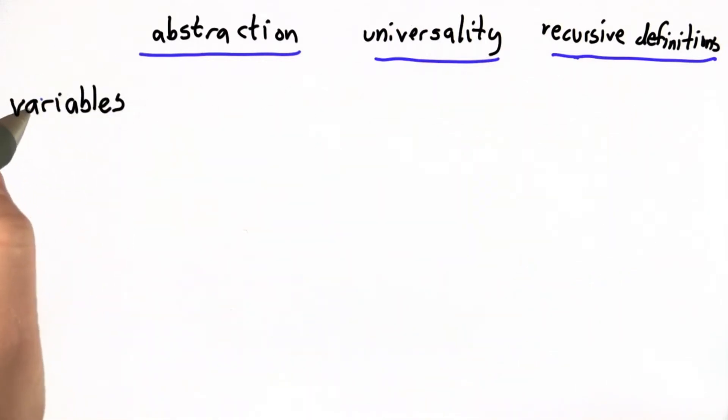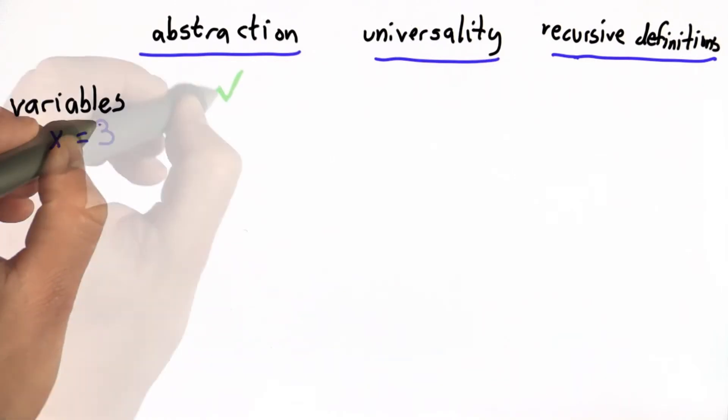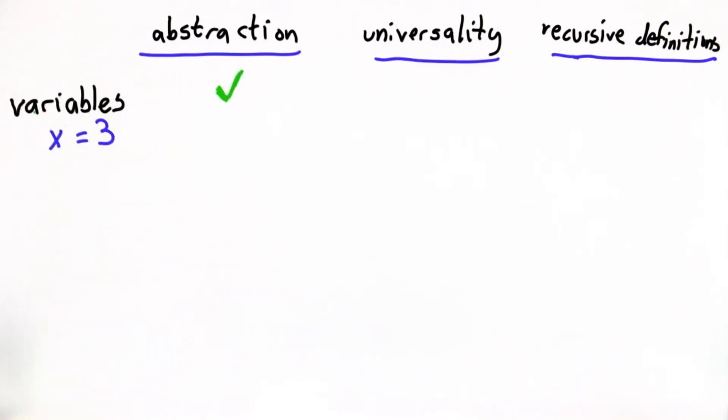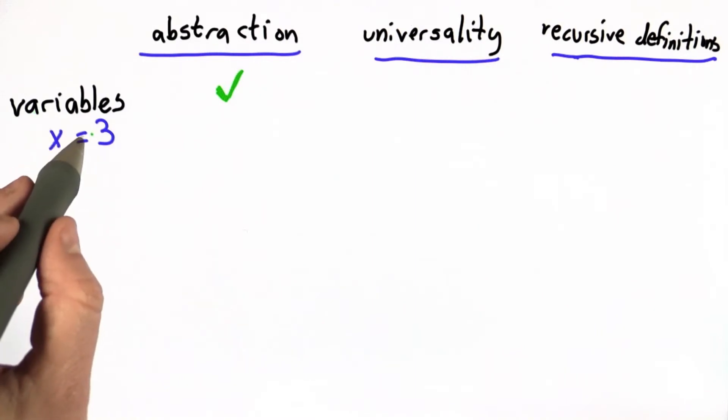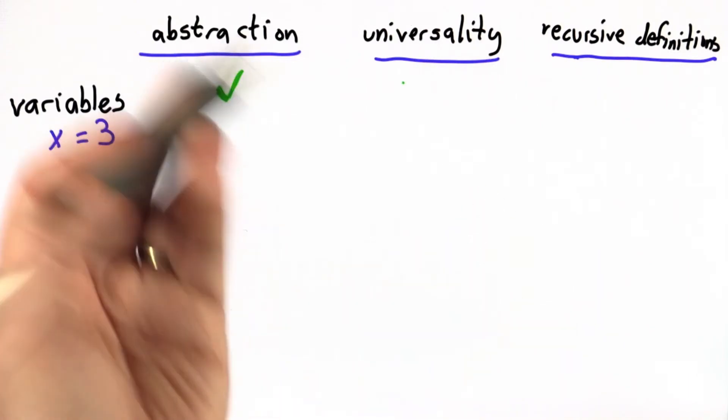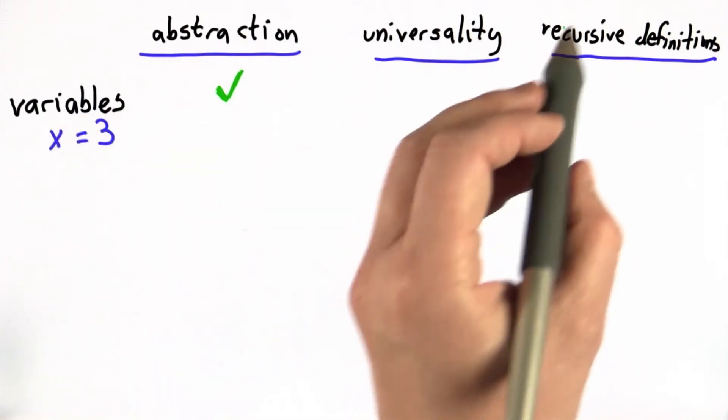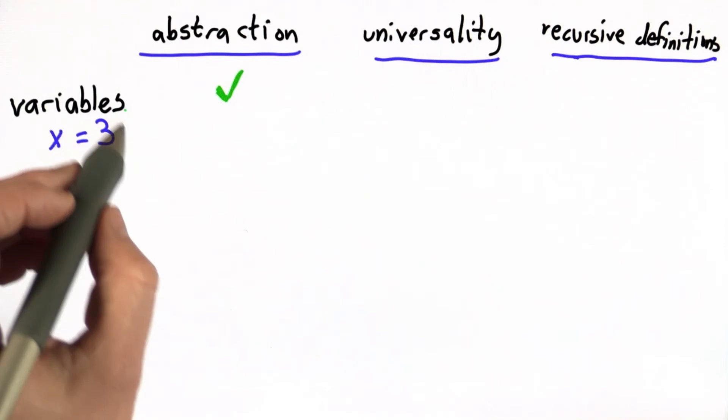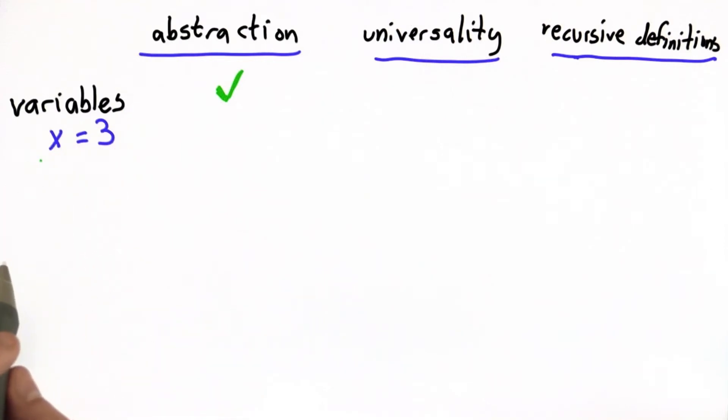In Unit 1, we introduced the concept of variables. We can use a name to refer to some value. So that's definitely a type of abstraction, allowed us to use the name x to refer to different things. It's helpful for universality, but by itself it doesn't really provide us that. And it's not really a recursive definition, although we can define variables in terms of other variables.